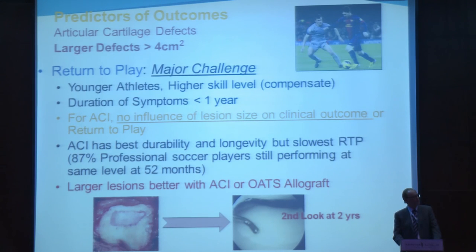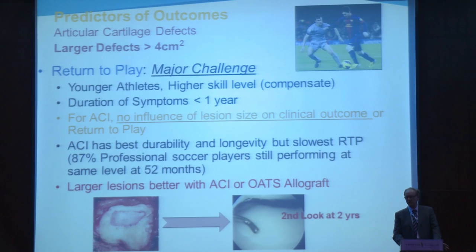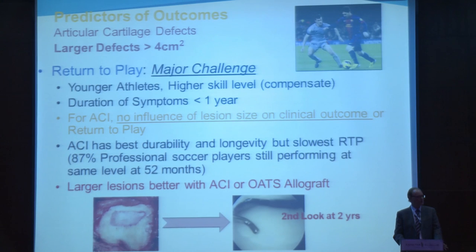For larger defects greater than 4 cm², that's the biggest challenge. Again, best in younger athletes, best in players with symptoms less than one year. For ACI, there's no influence of size on clinical outcome or return to play — ACI has the best durability and longevity, but the slowest return to play at 12 to 18 months. Professional soccer players were still performing at the same level at 52 months, with 87% of those who returned to play still performing at the highest level. Larger lesions do better with ACI or OATS allograft.